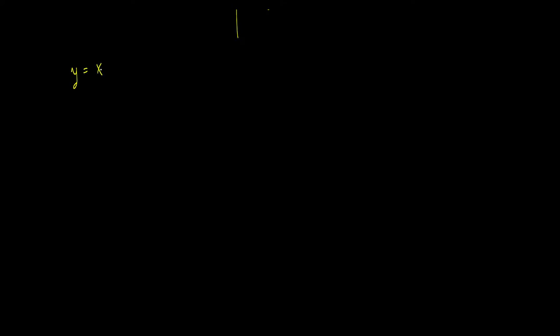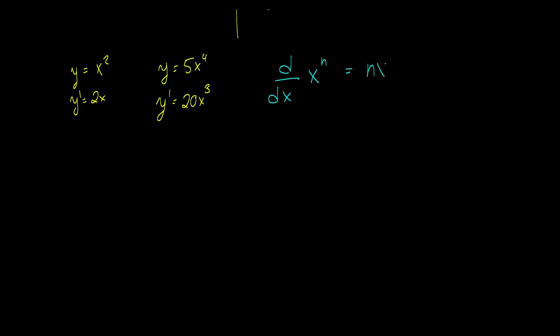I want you to see if you can find a pattern. If I take y equal to x squared, I get y prime equal to 2x. And if I take y equal to 5x to the 4th, I get y prime equal to 20x cubed. The pattern is: if we take the derivative with respect to x of x to some power n, we get n times x to the n minus 1. For example, the derivative of x cubed is 3 times x to the 3 minus 1, which is 3x squared.